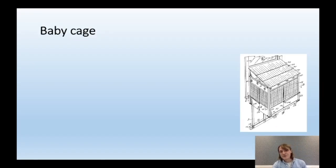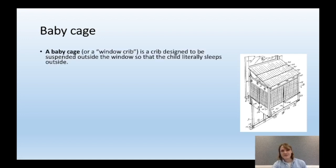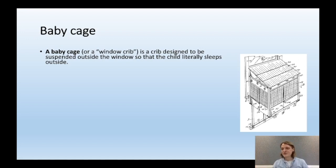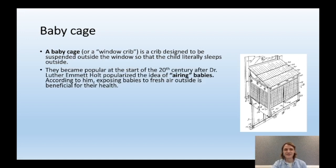A baby cage — also called a window crib — is essentially a crib designed to be suspended outside the window, so that your child sleeps outside, literally. You just put the crib outside the window, close your window, and the child is hanging outside of your flat.